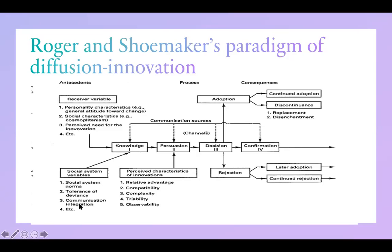Communication integration refers to the capability of integrating communication — how soon a message is integrated into a society and how soon a society can adopt it. Norms are somewhat related to tolerance of deviancy; deviance comes from the word deviation. Antecedents, then, are pre-existing conditions on both the personal and social level that can affect a person's adoption of an innovation.